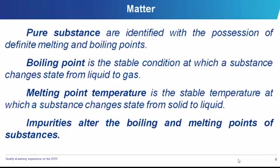Pure substances are usually identified by two major things: their boiling point and their melting point. That is how we identify pure substances from impure substances. Impurities tend to alter the melting point and the boiling point of substances. The boiling point is the stable temperature at which a substance changes state from liquid to gaseous, while the melting point is the temperature at which it changes from solid to liquid.